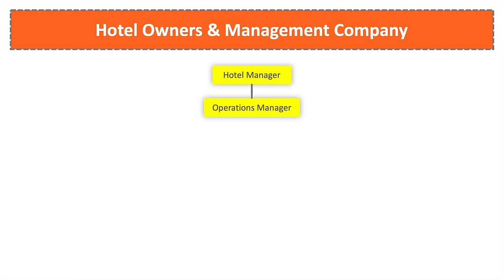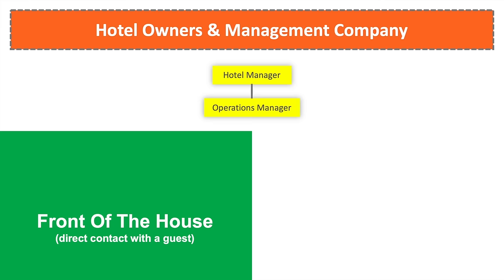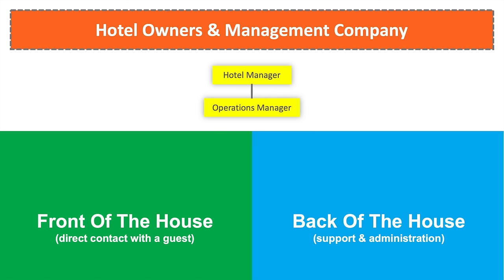All hotel departments are divided into two categories: the front of the house — departments that are in direct contact with guests — and the back of the house — departments that provide support and administrative services and have no direct contact with customers.